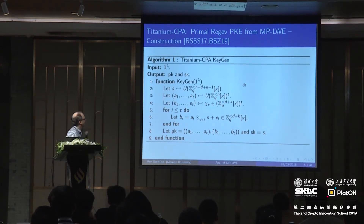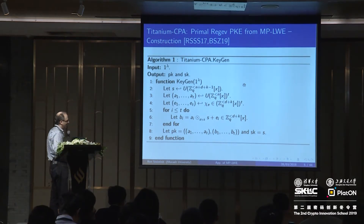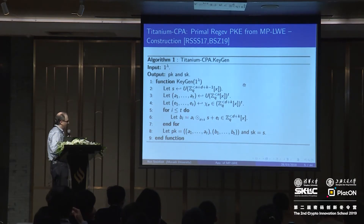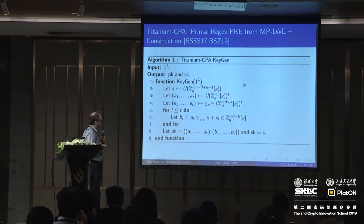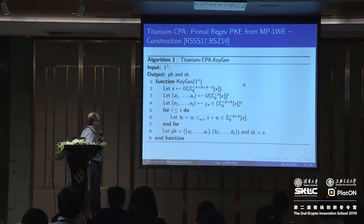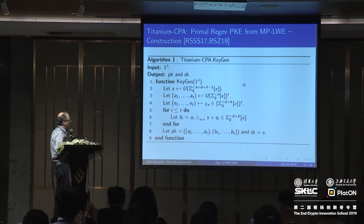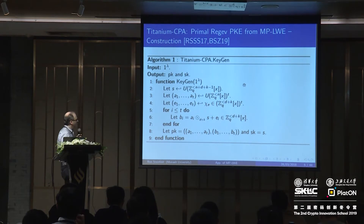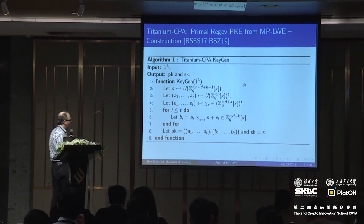Here's the way we generate the keys. If you remember how the original LWE-based Regev encryption scheme works, the public key consists of essentially a bunch of LWE samples, and the secret key is the LWE secret. We generate random polynomials A_i — we're going to have T of them in the public key — chosen at random of degree N or less than N. Then we have small errors chosen from some small error distribution E.